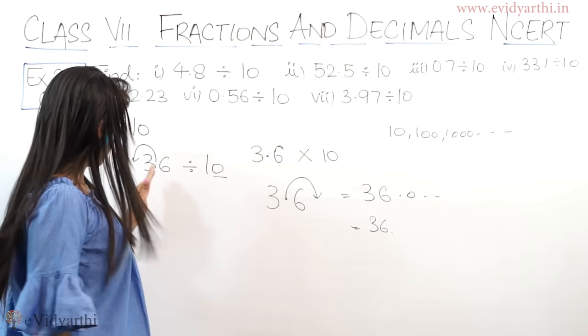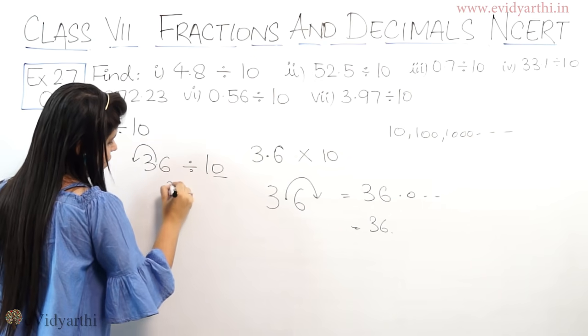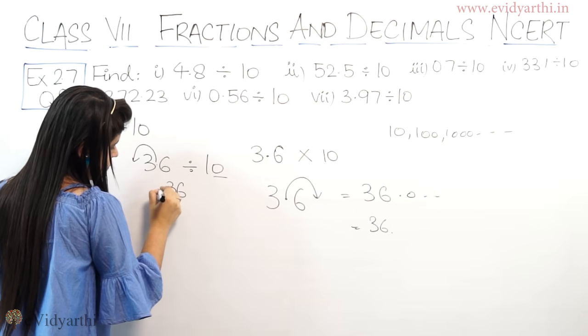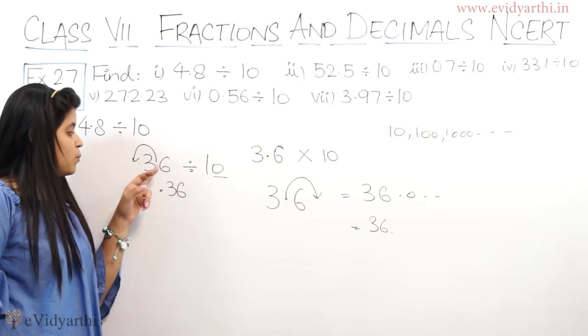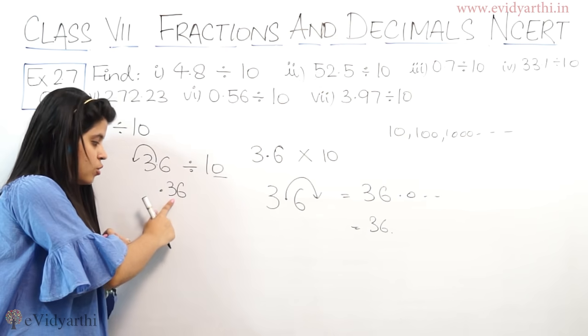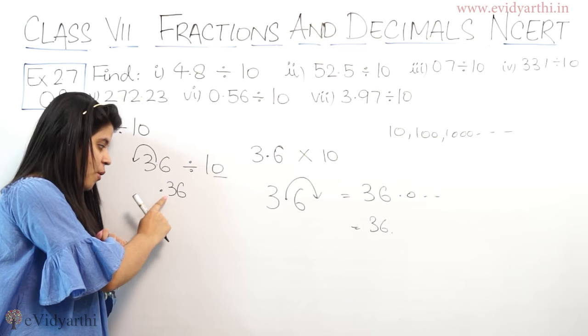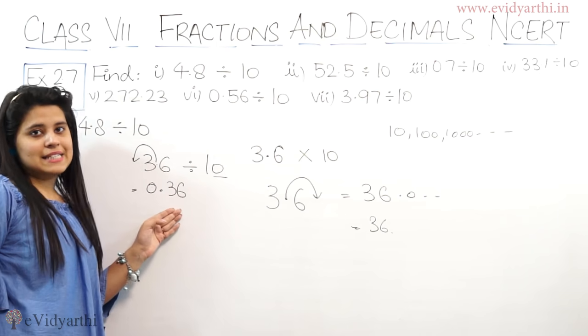So how many zeros? How many digits are there? Here, there is one 0, so this will be 0.36. Because 3.6, the point is there, this point is left hand side. So which means 0.36.